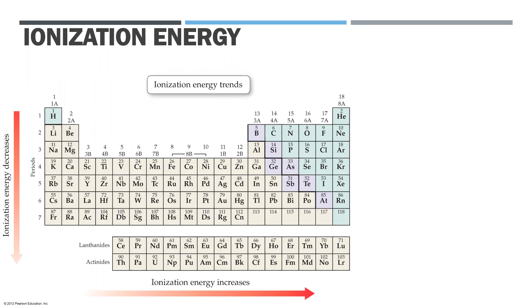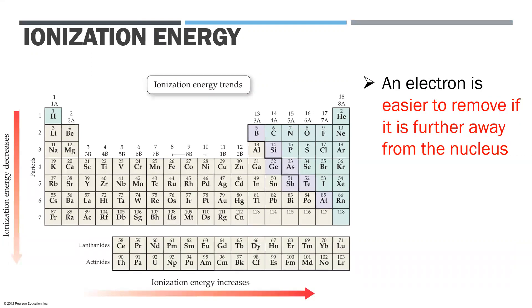What are some of the trends of ionization energy? An electron is easier to remove if it's further away from the nucleus, so ionization energy decreases as we go down a group. Why? Because as we go down, the elements are getting bigger — up in this corner the elements are much smaller. As we go down a group, it's easier to remove an electron when the valence shell is further away from the nucleus, corresponding to higher energy levels or shells.